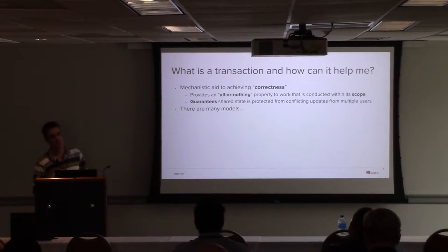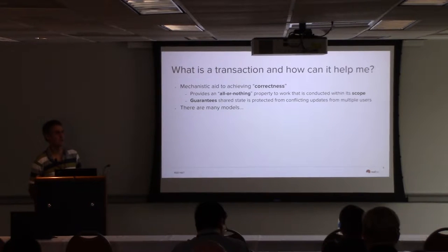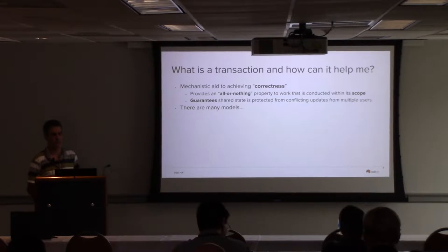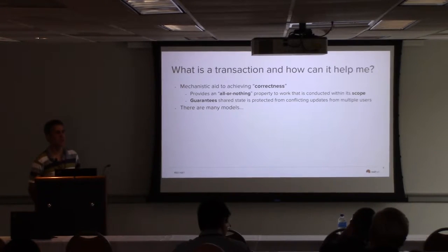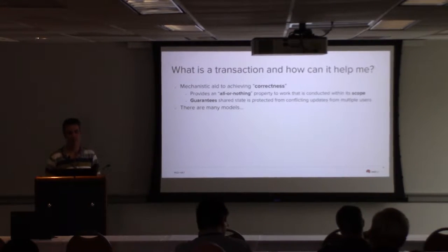So what exactly is a transaction and how is it going to help build microservices-based systems? A transaction is a mechanism by which you can move the system from one known good state to a second known good state, providing certain correctness guarantees. Effectively, it provides an all-or-nothing guarantee — if something goes wrong, you want to be able to revert things. There's not just one model of transactions — there are many. You've probably heard of the JTA model, built on the old X/Open standard called XA. There are also SAGAs, compensation-based approaches, business activities from OASIS, and many different protocol flavors.